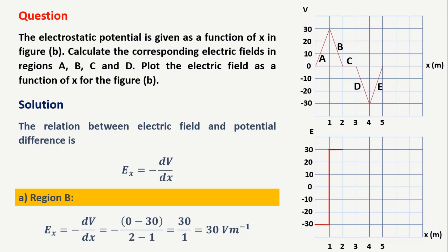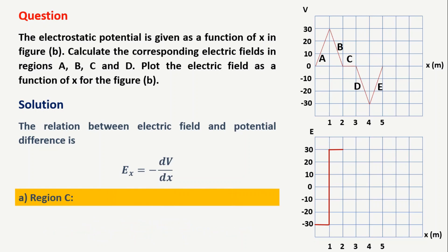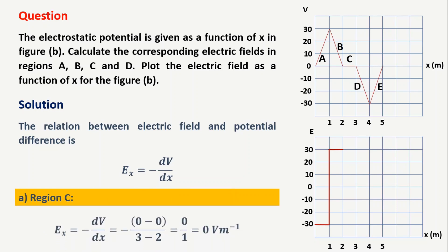Let us go for the third region. In the third region, the voltage remains constant, so the change in voltage becomes 0. Therefore, the electric field in this region is 0. Representing it in the E versus x graph, there is a flip from 30 volts per meter to 0 volts per meter. In the region from 2 to 3 meters, the field remains 0.